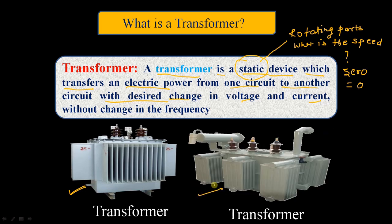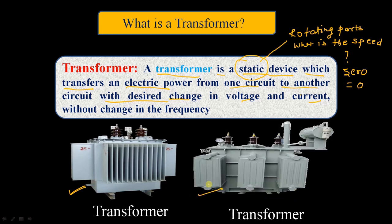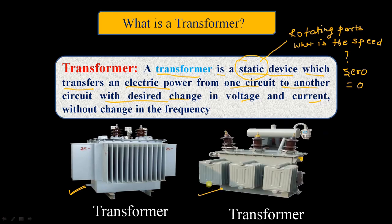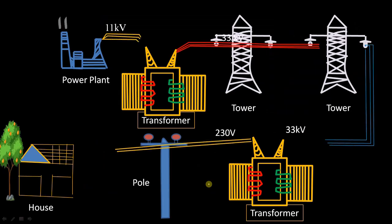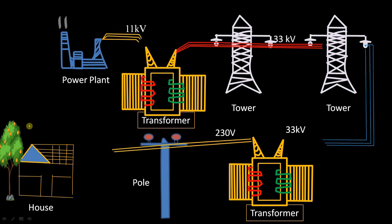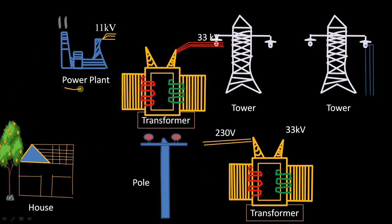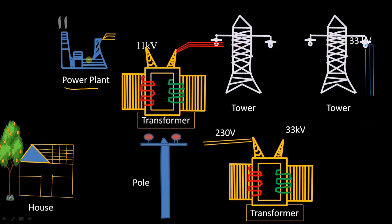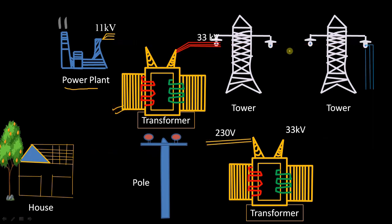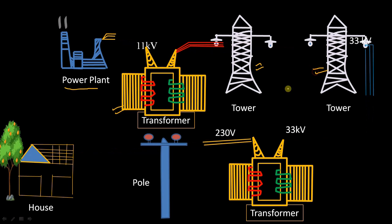Now this is a schematic diagram of a transformer, and physically the transformer looks like this. For better understanding the concept of transformer I am showing this animation. This is the power plant, which is used to generate power. And these are our transmission lines.